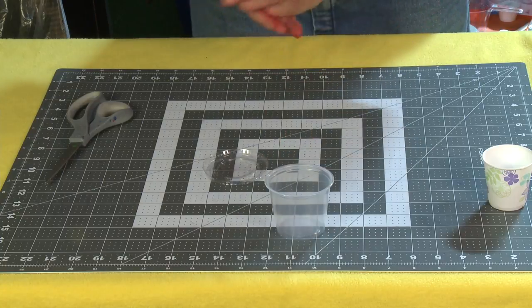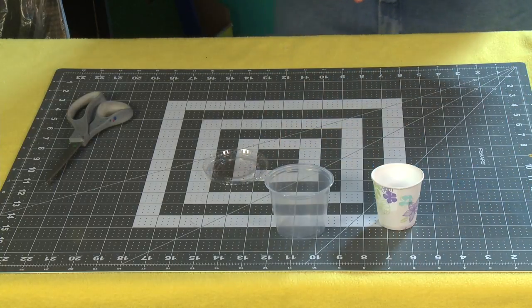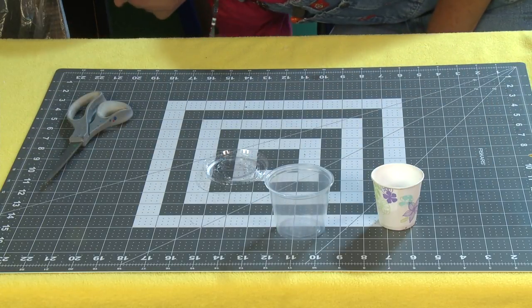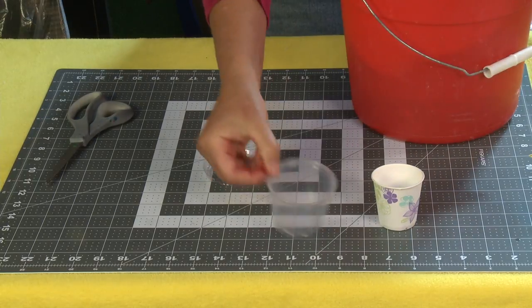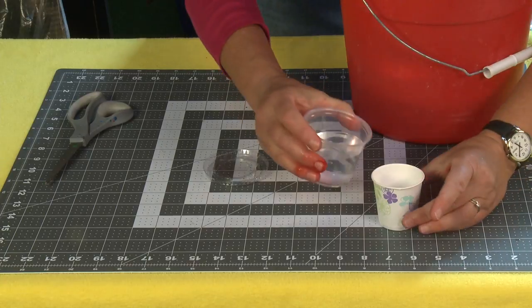So we're going to start with the plastic cup and we'll do the paper cup at the same time. The first thing you're going to need is a little bit of cold water. I'm actually going to use my plastic cup to fill my paper cup. You want to fill it about halfway.